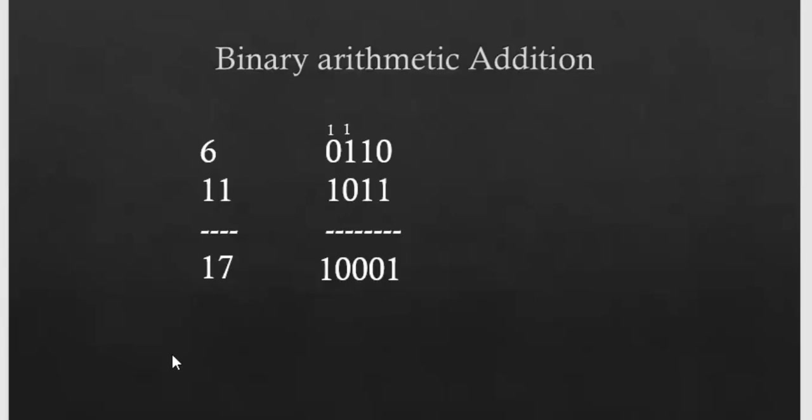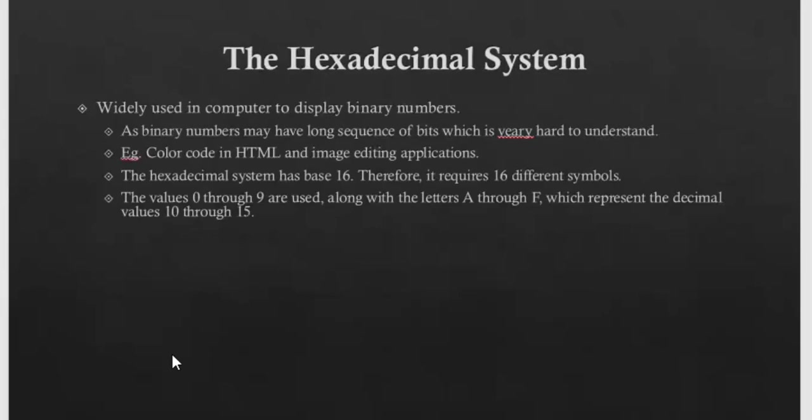Hexadecimal system is widely used in computers to display binary numbers. Binary numbers can be very long strings of 0s and 1s which are hard to understand, so they're converted to hexadecimal. Popular examples include color codes in HTML and image settings applications. Hexadecimal has base 16 with 16 different symbols: 0 to 9 and A to F.